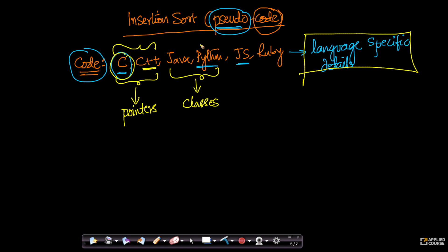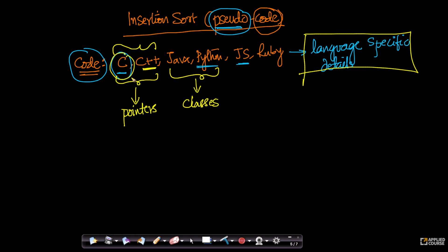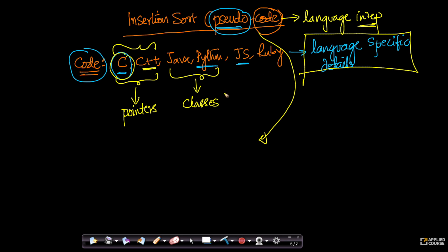The whole goal of data structures and algorithms is: once you know the intuition, once you know what insertion sort is, you should be able to implement it in any language you are comfortable in. That's why we wanted to choose a form of writing code which is language independent — a language independent way of explaining code to you.